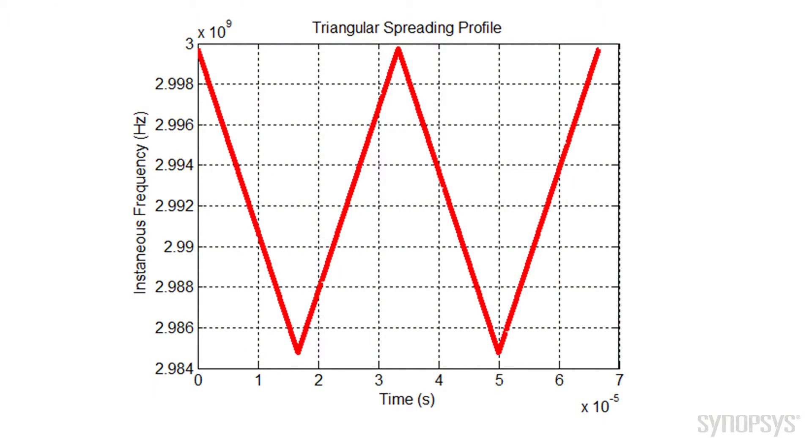In this example, we're looking at a clock that would normally be at 3 GHz. But what we do is slowly change the frequency of that clock with respect to time, over a range from 3 GHz down to 2.985 GHz and then back up to 3 GHz again. So there's a spreading from 3 GHz down to 2.985 GHz and back up again over a period of about 33 microseconds.